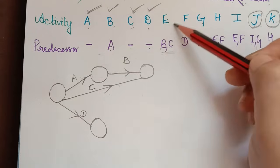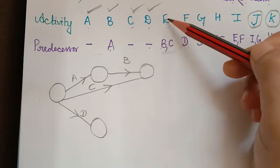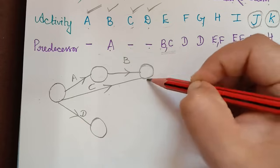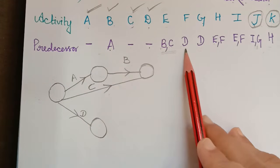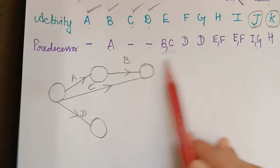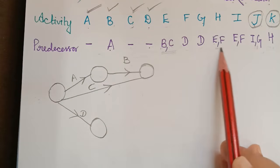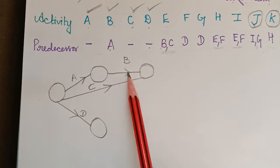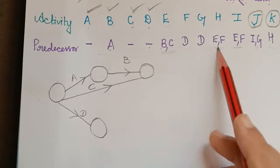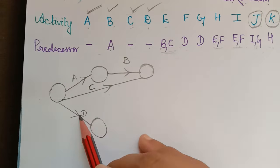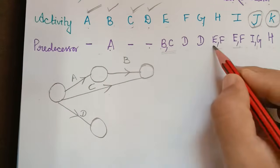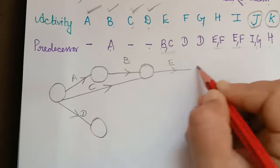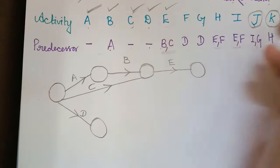Next is activity E, which has two predecessors: B and C. So the starting node for E is the end node of B and C. We check if E appears with any other completed activity — it appears with F, but F has not been constructed yet, so we draw E directly.